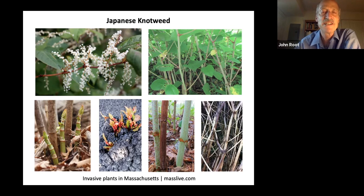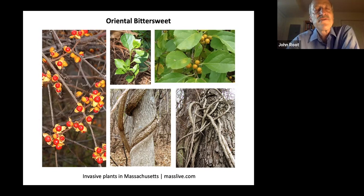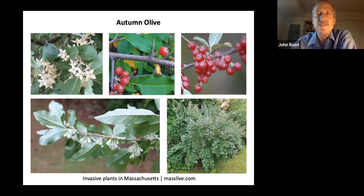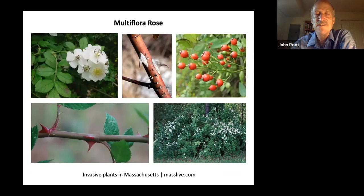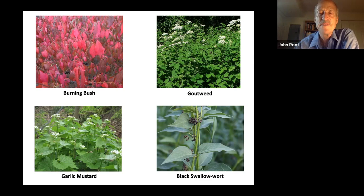Oriental bittersweet is a terrible vine that chokes and kills trees — it girdles them. If you have this vine on your property and if it's reached the canopy of any of your trees, be sure to lop them at the ground to make sure they can't grow more flowers and seeds that will be eaten by the birds and spread all over, and try to uproot this plant wherever it's found. Autumn olive is a non-native shrub that's nitrogen-fixing and has a serious advantage over our native shrubs. Multiflora rose is another non-native shrub that's made itself far too welcome. Burning bush is no longer legal to sell because it is so invasive. Goutweed, garlic mustard, and black swallowwort are examples of herbaceous plants that'll take over. Visit masslive.com, invasive plants in Massachusetts, to learn more.